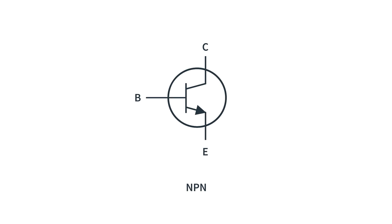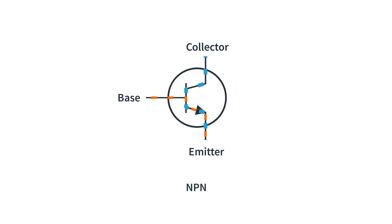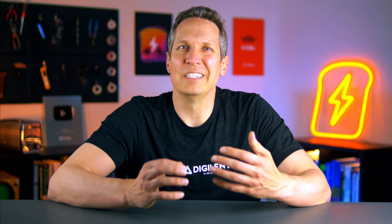On a circuit level, a BJT has three terminals — the base, collector, and emitter. In an NPN transistor, a small current flows into the base and exits through the emitter, while a larger current flows from the collector to the emitter. When acting as an amplifier, this small base current controls a much larger current flowing from the collector to the emitter. Both currents ultimately leave the emitter, so you can think of the emitter as the common terminal where everything exits.